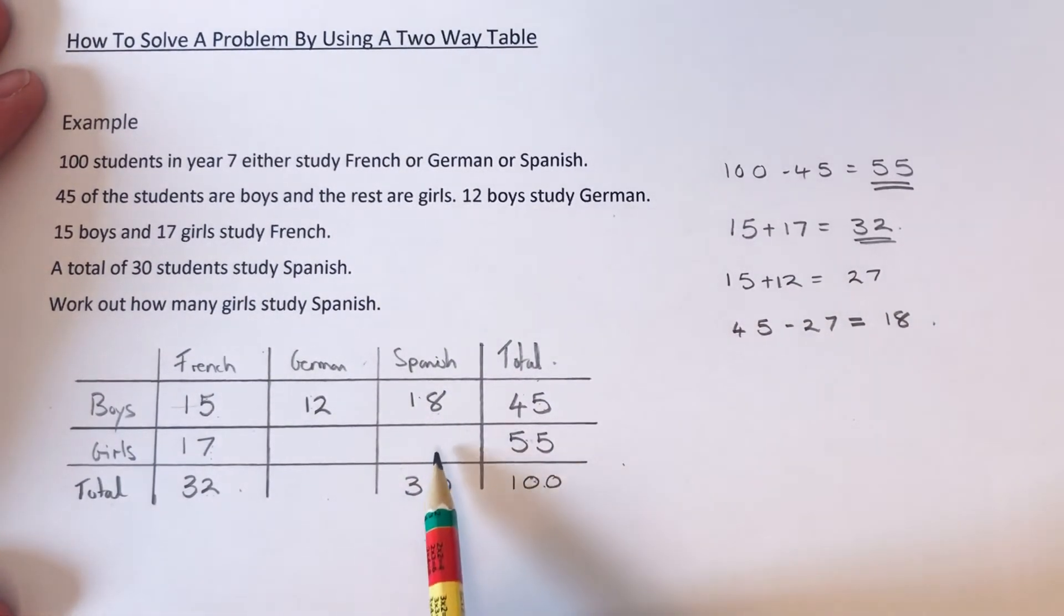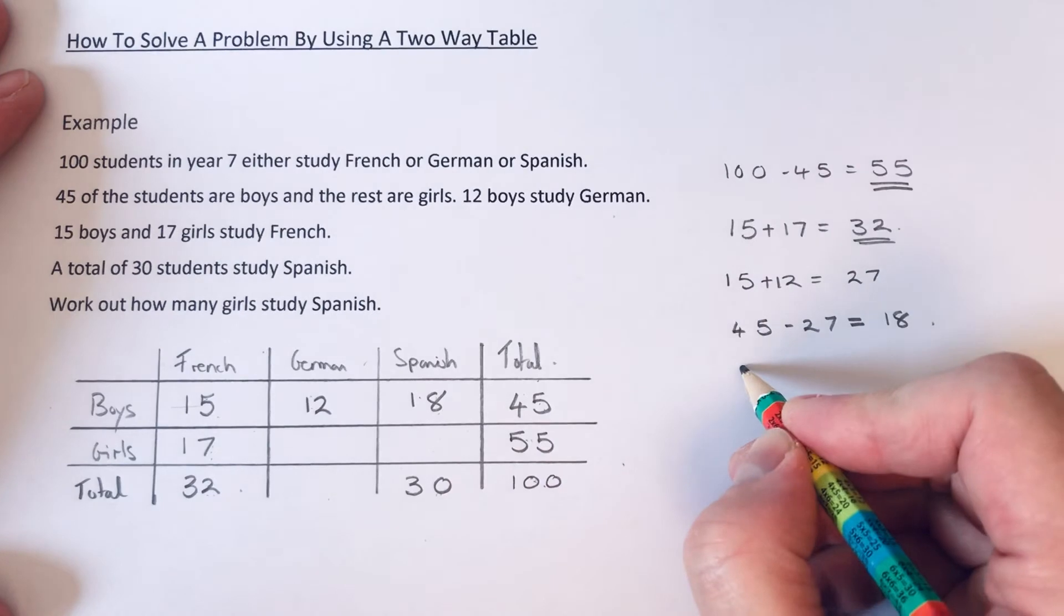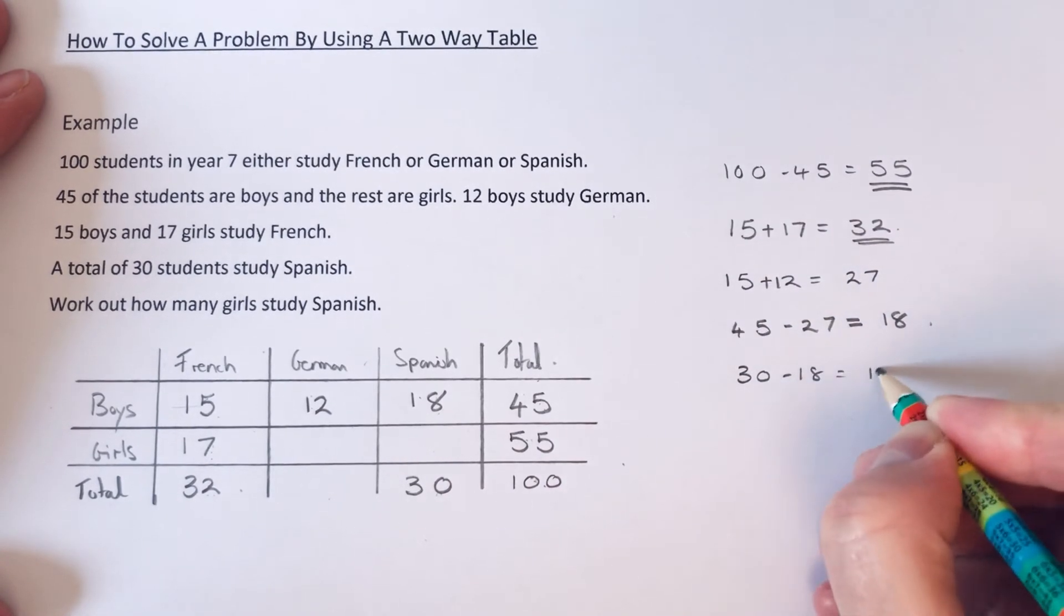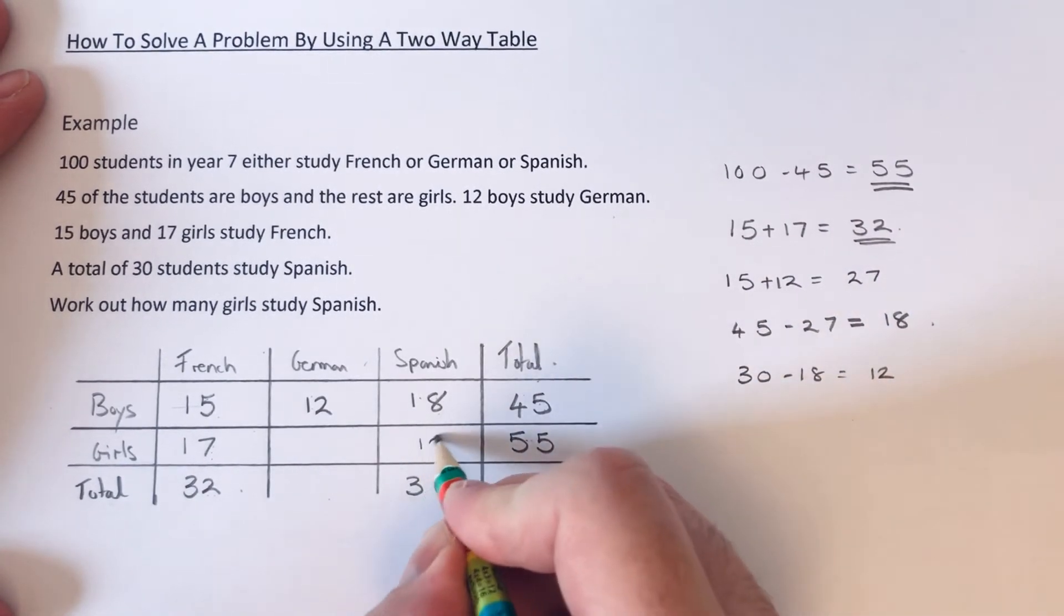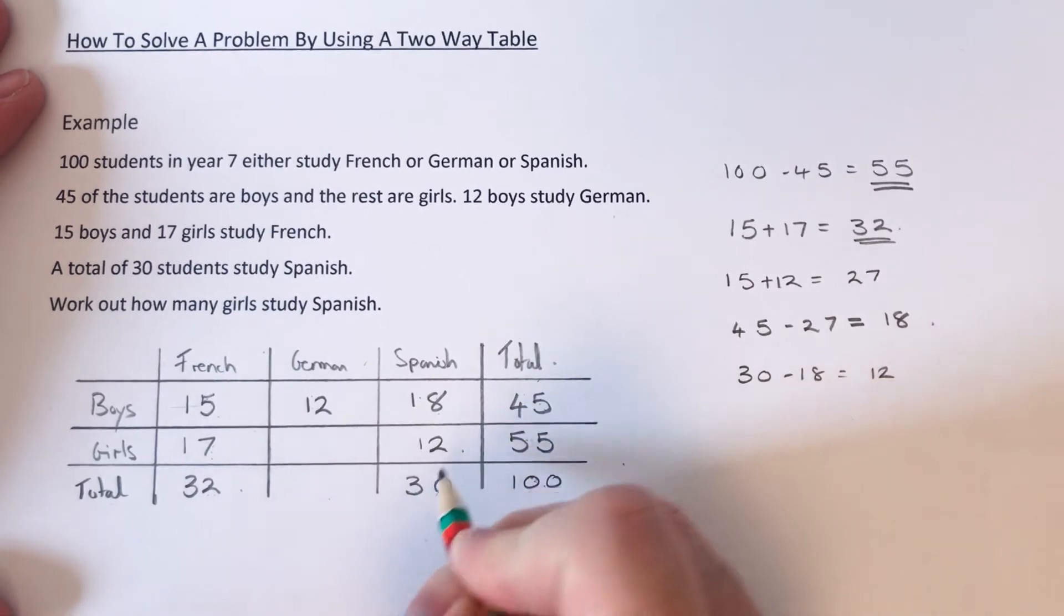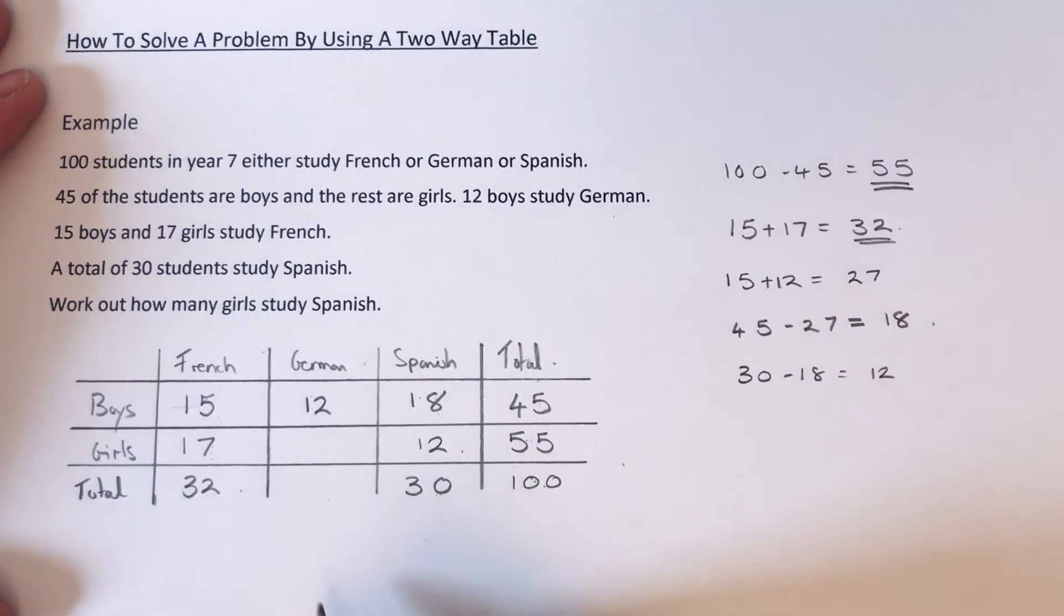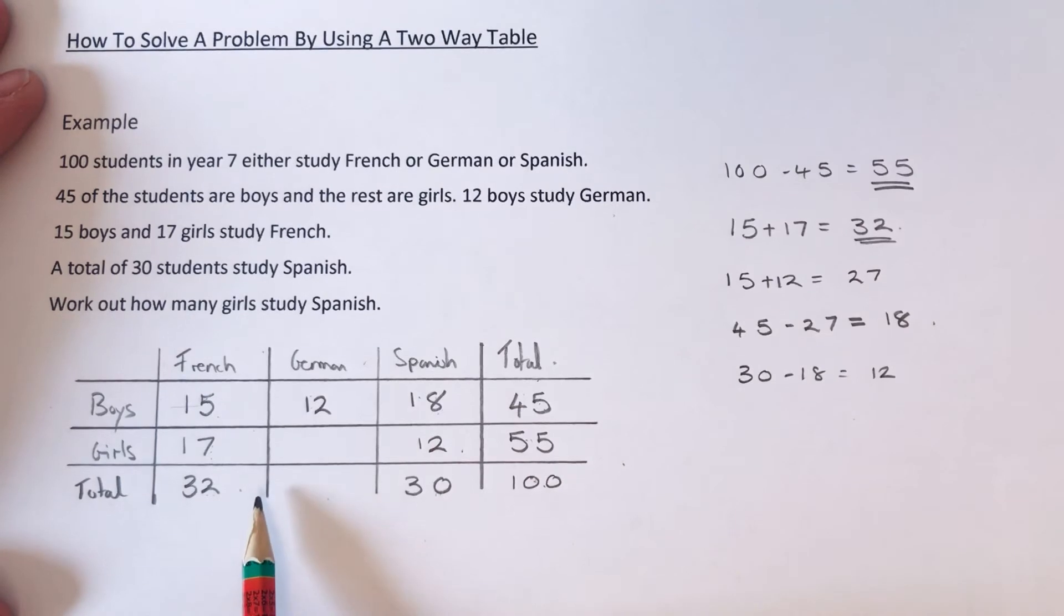So that goes there. And then we could work out how many girls study Spanish. So if we do 30 minus 18, that is 12. I think we've answered the question now, but I'm just going to complete the two-way table.